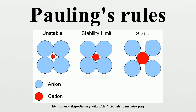Third rule: sharing of polyhedron corners, edges, and faces. The sharing of edges and particularly faces by two anion polyhedra decreases the stability of an ionic structure. Sharing of corners does not decrease stability as much, so octahedra may share corners with one another. The decrease in stability is due to the fact that sharing edges and faces places cations in closer proximity to each other, so that cation-cation electrostatic repulsion is increased. The effect is largest for cations with high charge and low coordination number.